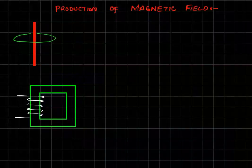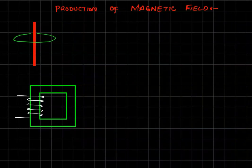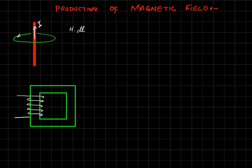After studying a little bit about magnetic fields and how they can act in different ways, let's start with the production of a magnetic field. Here we have a simple current-carrying conductor with current direction upward. According to the right-hand rule, the direction of the magnetic field will be counterclockwise. We will apply a well-known law called Ampere's law, stated as the closed integral of H·dl equals the total current passing through the conductor.